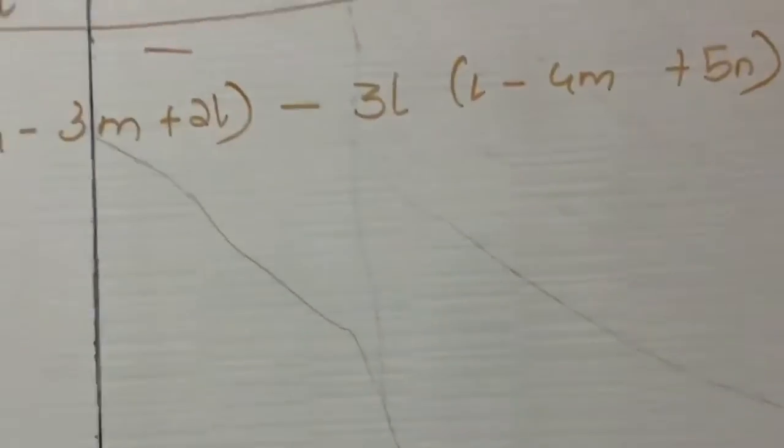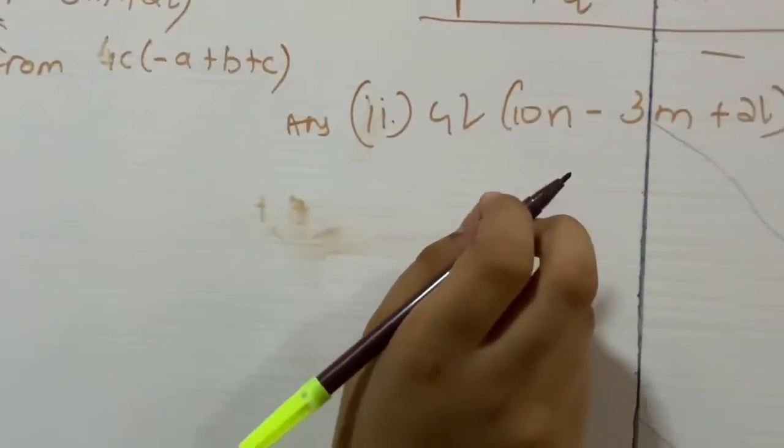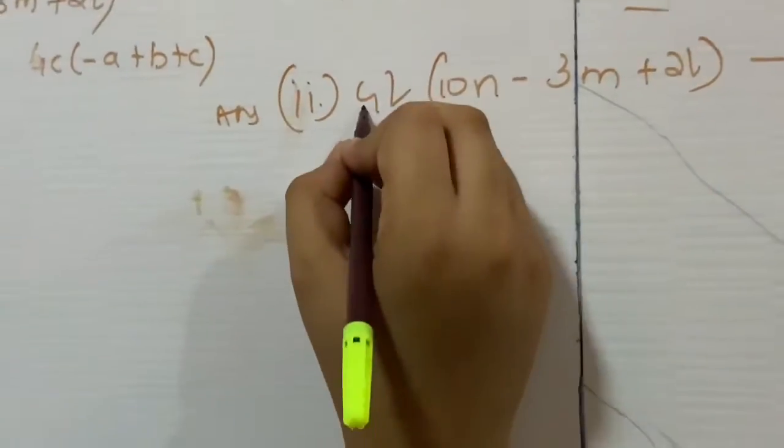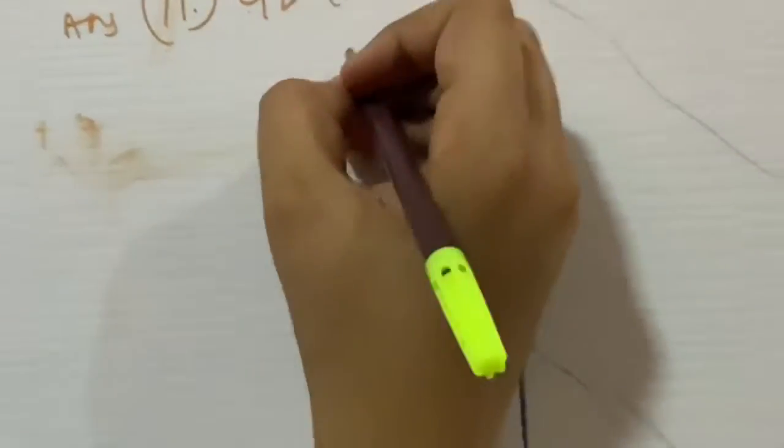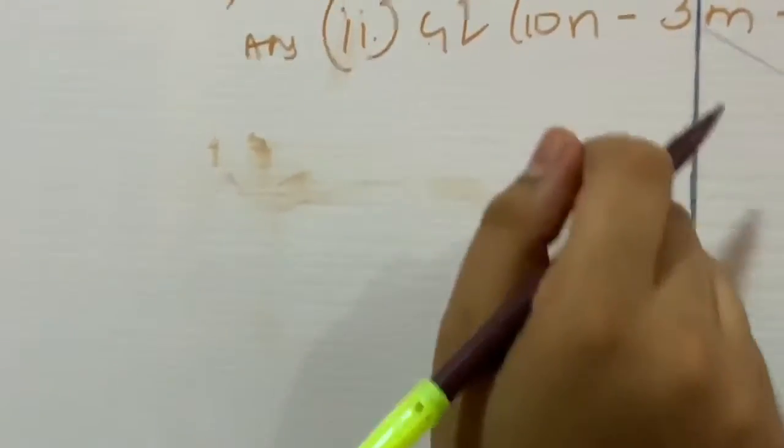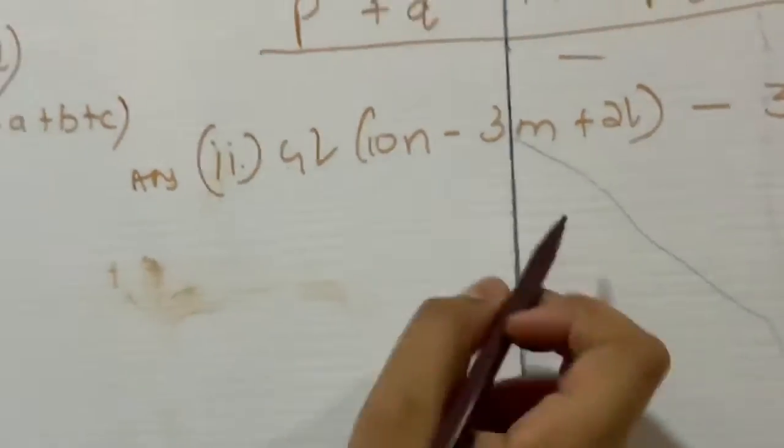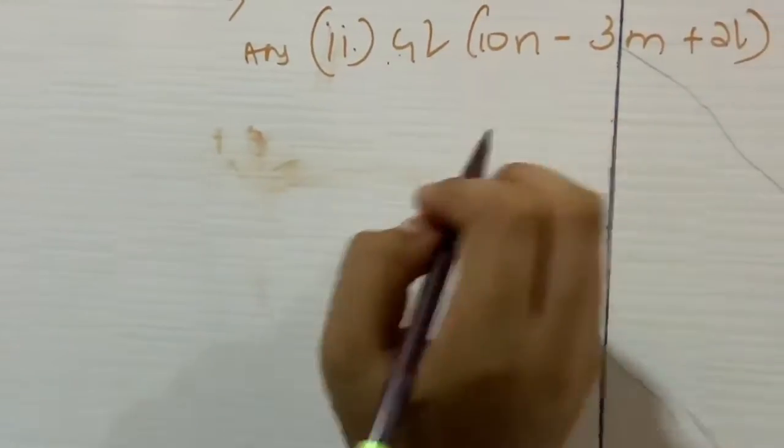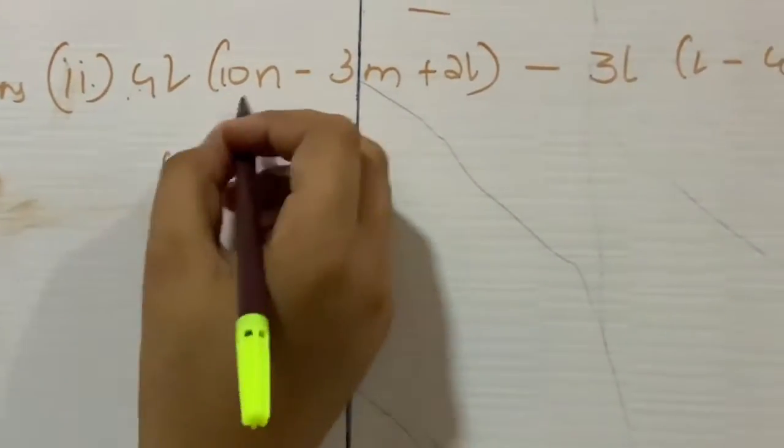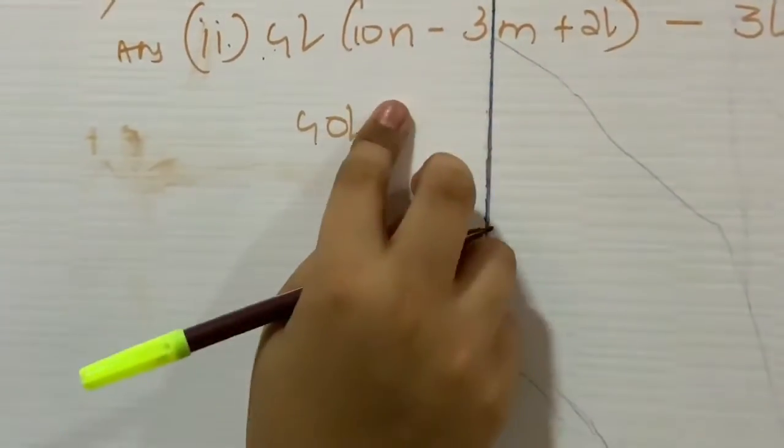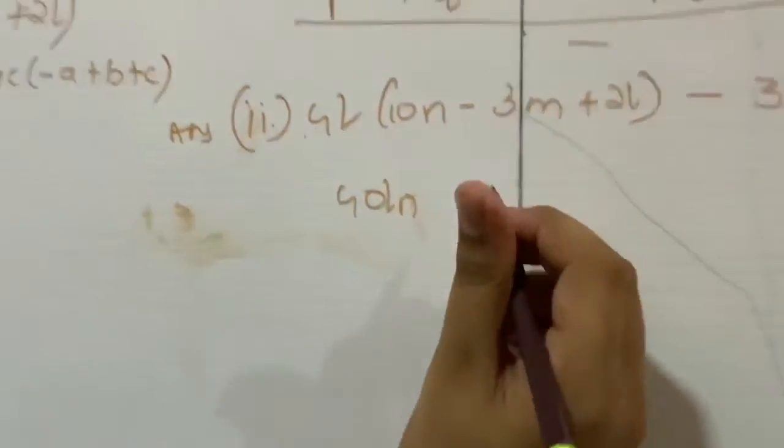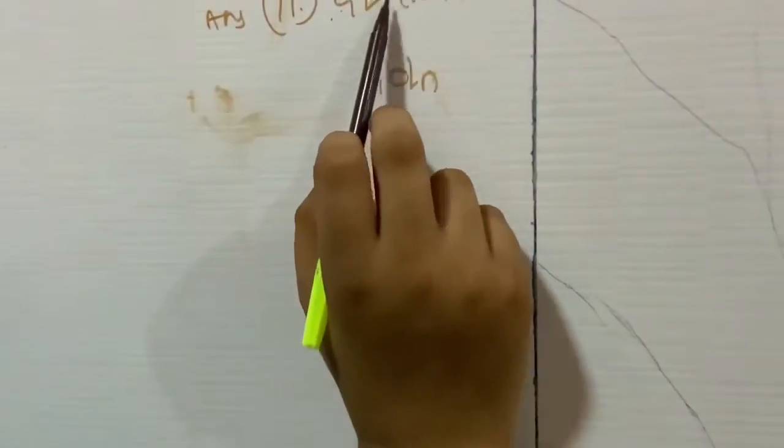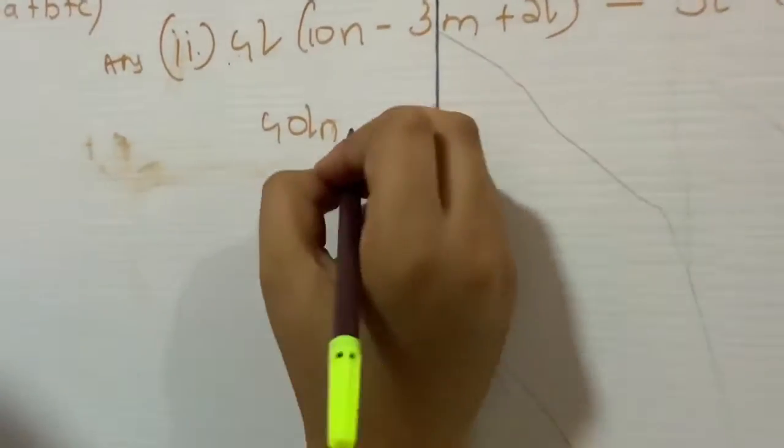So now let us start. Now here it will come 4L multiplied by 10N minus 3M plus 2L, which is now subtracted by 3L multiplied by L minus 4M plus 5N. So here first of all we need to open the brackets. Means we need to multiply them. Now 4L multiplied by 10N.